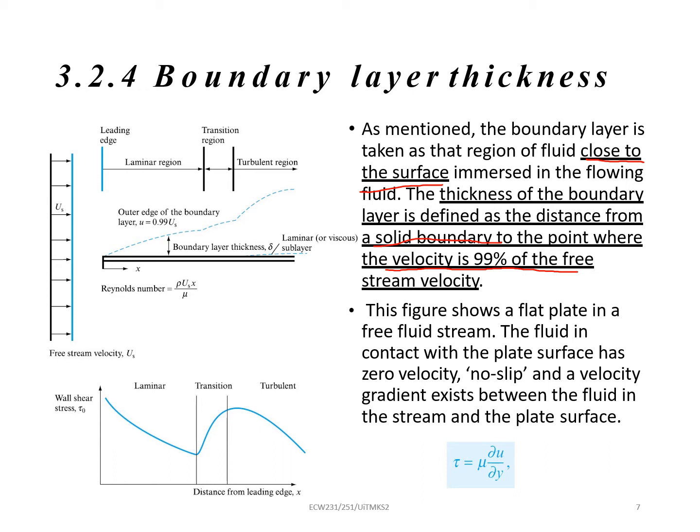This figure shows a flat plate in a free fluid stream. The fluid in contact with the plate surface, or the cliff that I mentioned, or boundary layer, we can call as plate surface. So when it touches the plate surface or cliff, there is zero velocity. And just mentioned again, this condition we call it as no-slip condition.